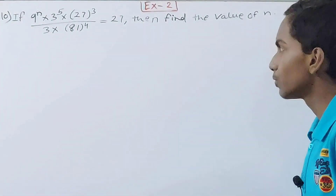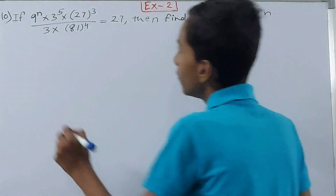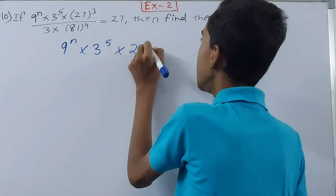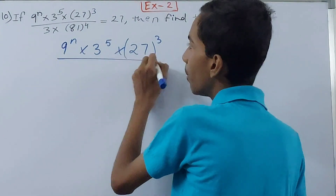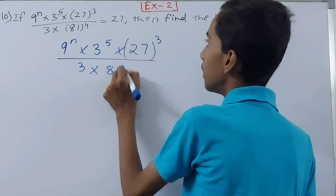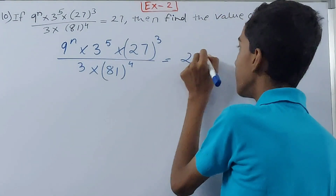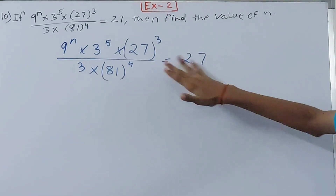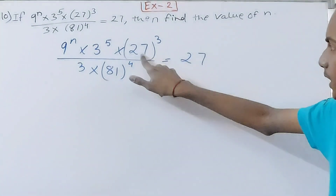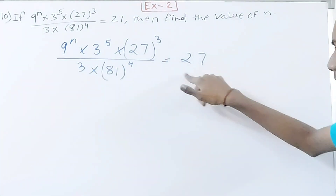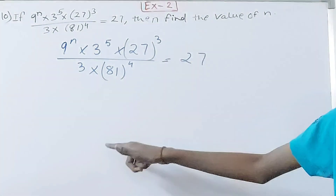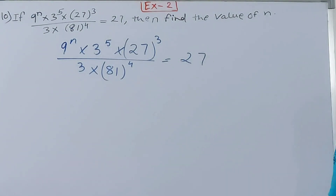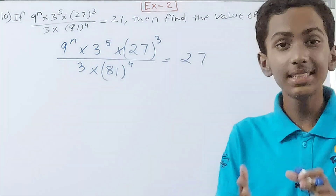So we have 9 to power n, into 3 to power 5, into 27 cubed, upon 3 into 81 to power 4, equal to 27. We also need to convert that 27 on the right-hand side. The numbers 9, 27, and 81 can all be made with base 3, while the 3s already have base 3. We want the same base everywhere before moving further.